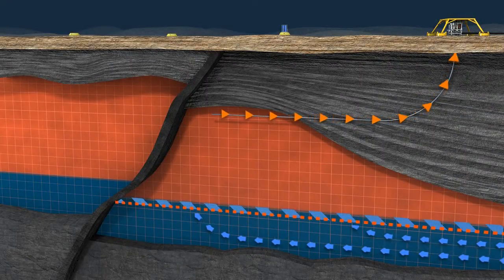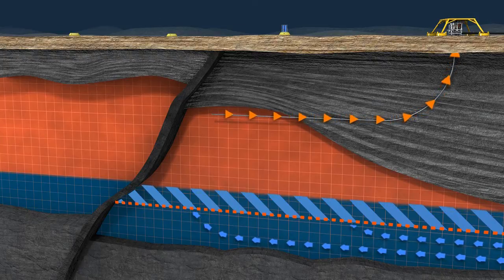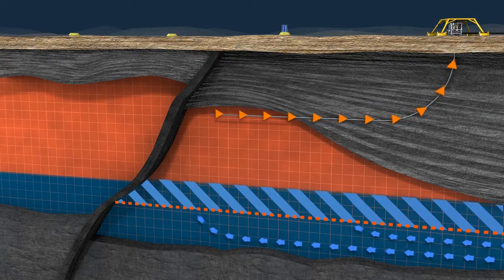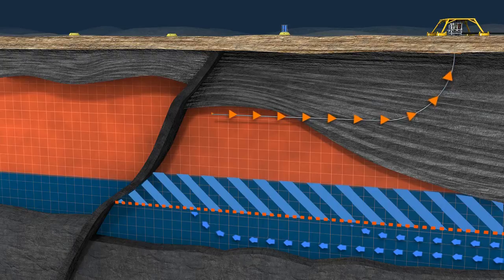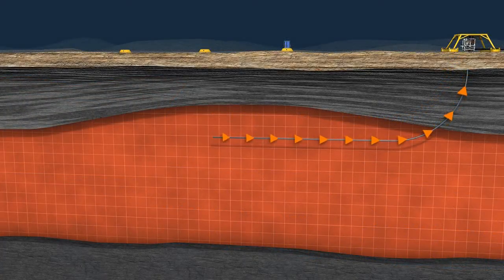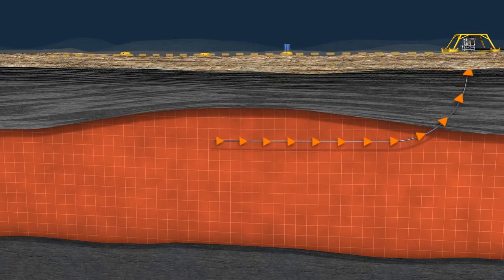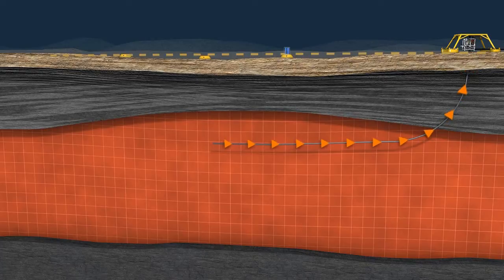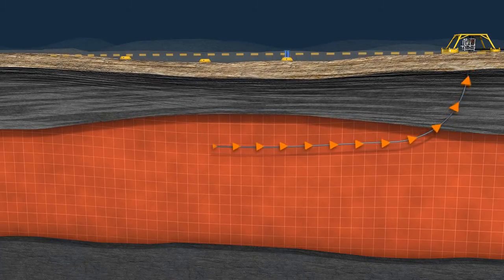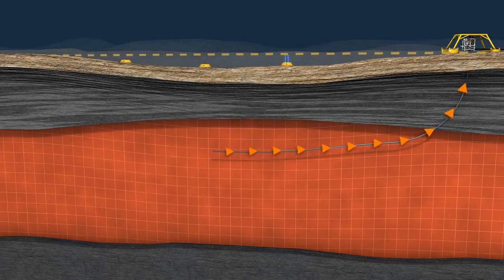The resulting interpretation gives the operator a clear understanding of how gas water contact is changing as well as whether there is any unpredicted migration of fluid in the reservoir. In addition, subsidence interpretations indicate how the reservoir is compacting as it is depleted. These unique interpretations enable operators to refine reservoir planning and take action to optimize production where necessary.